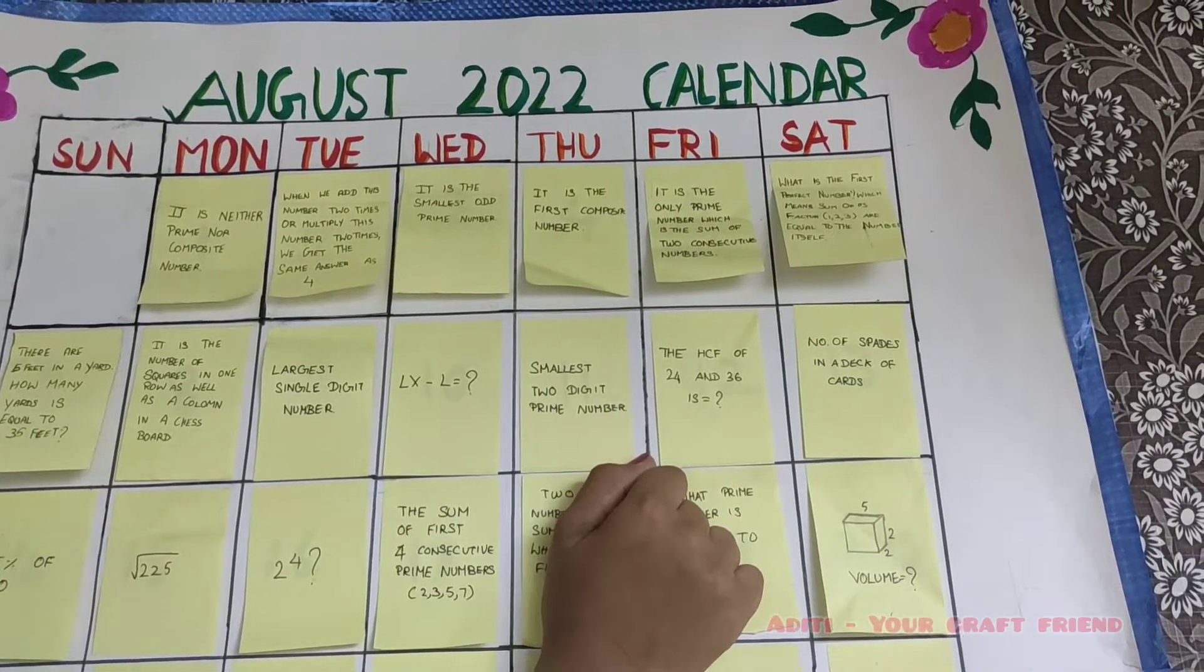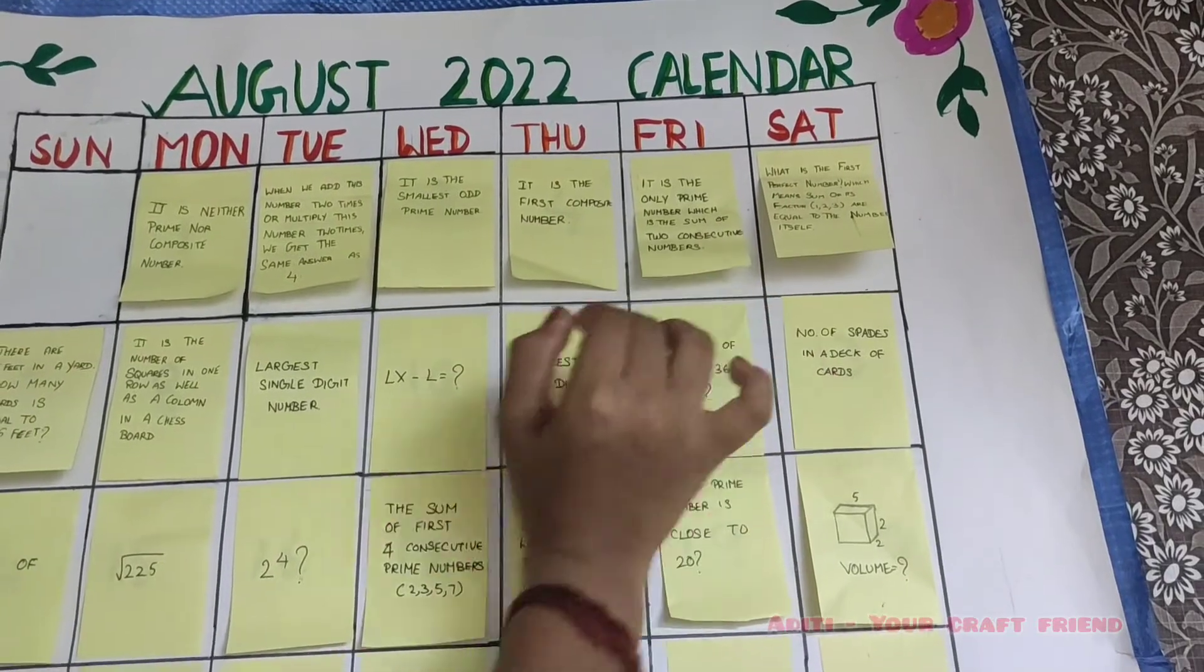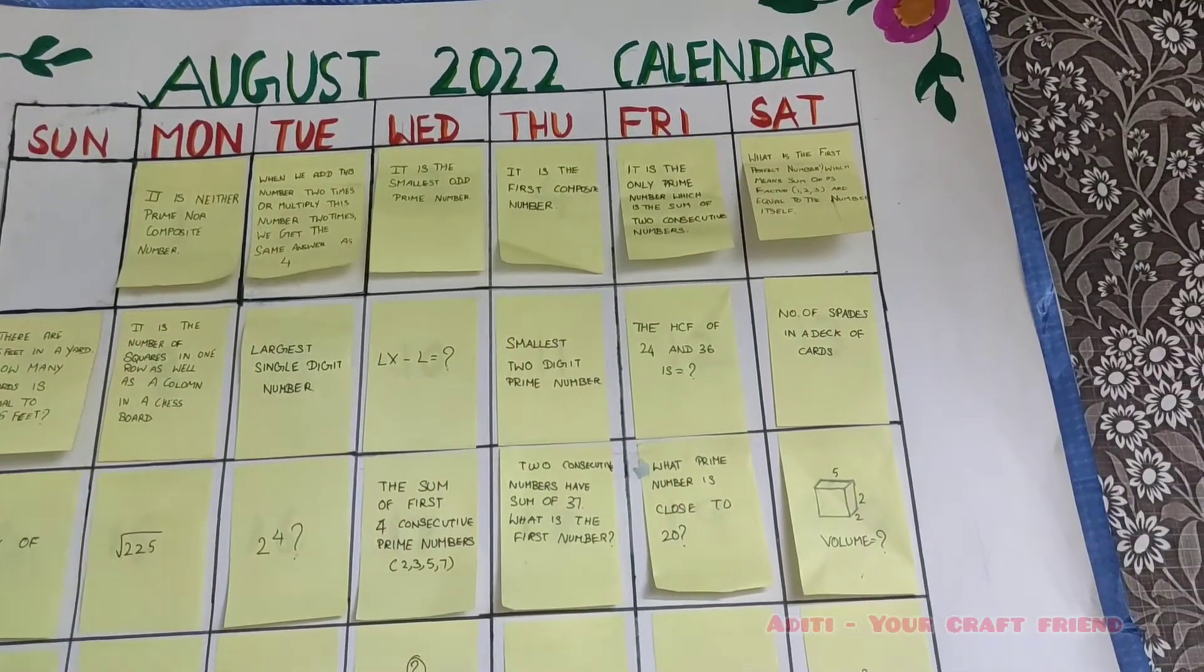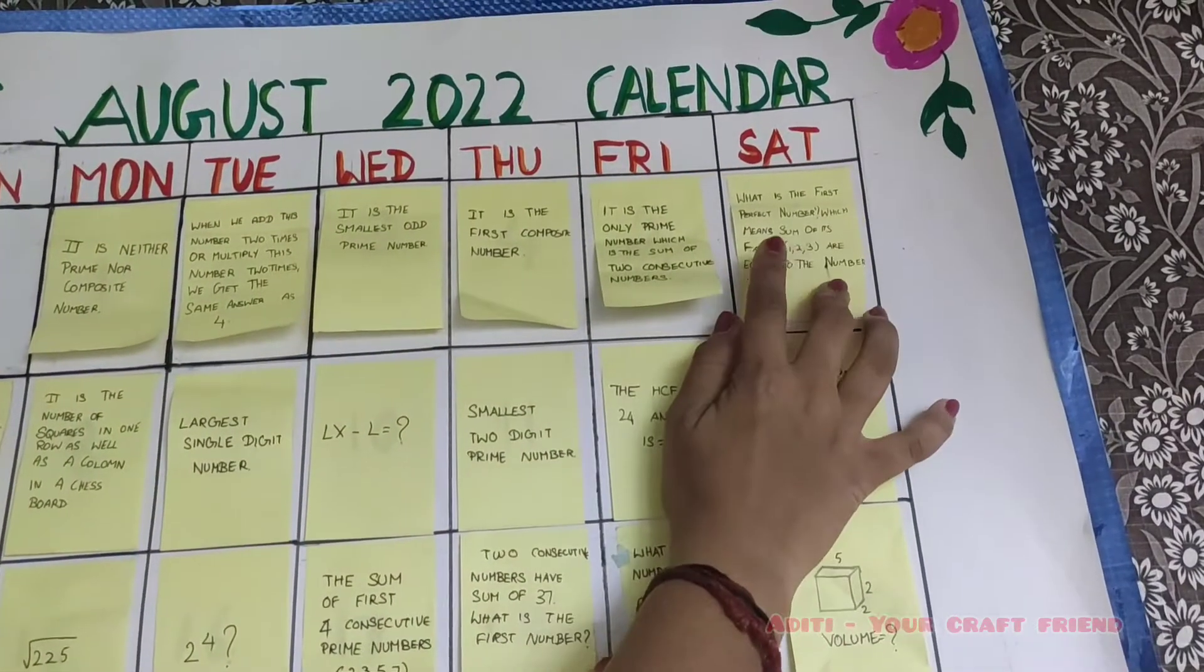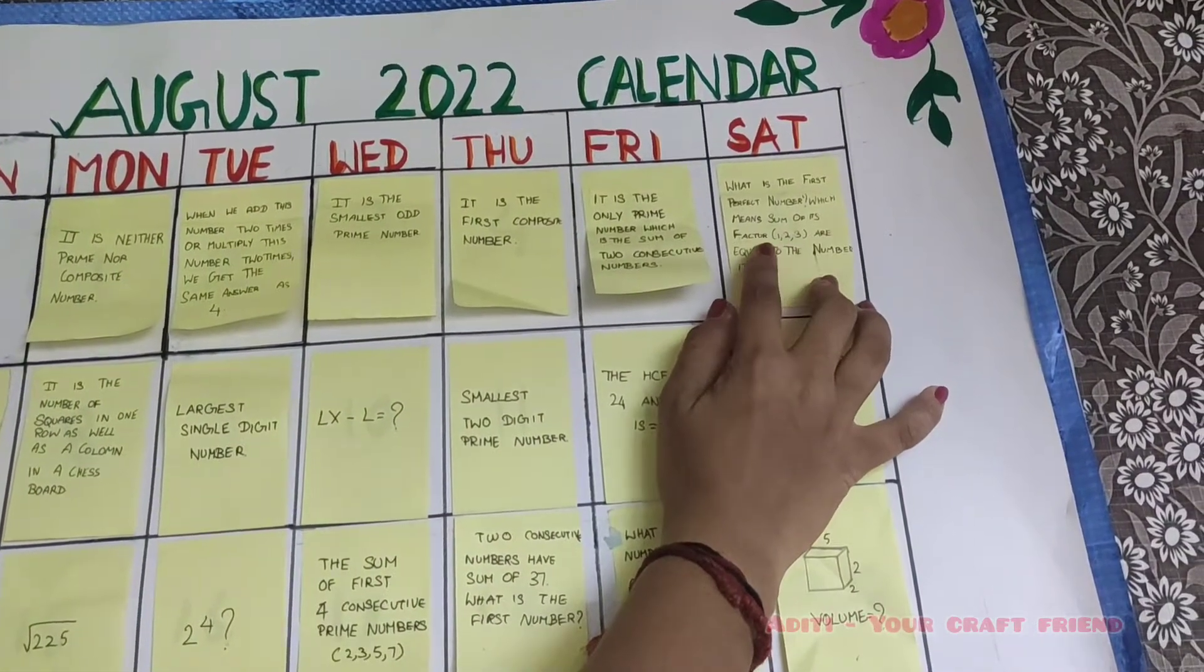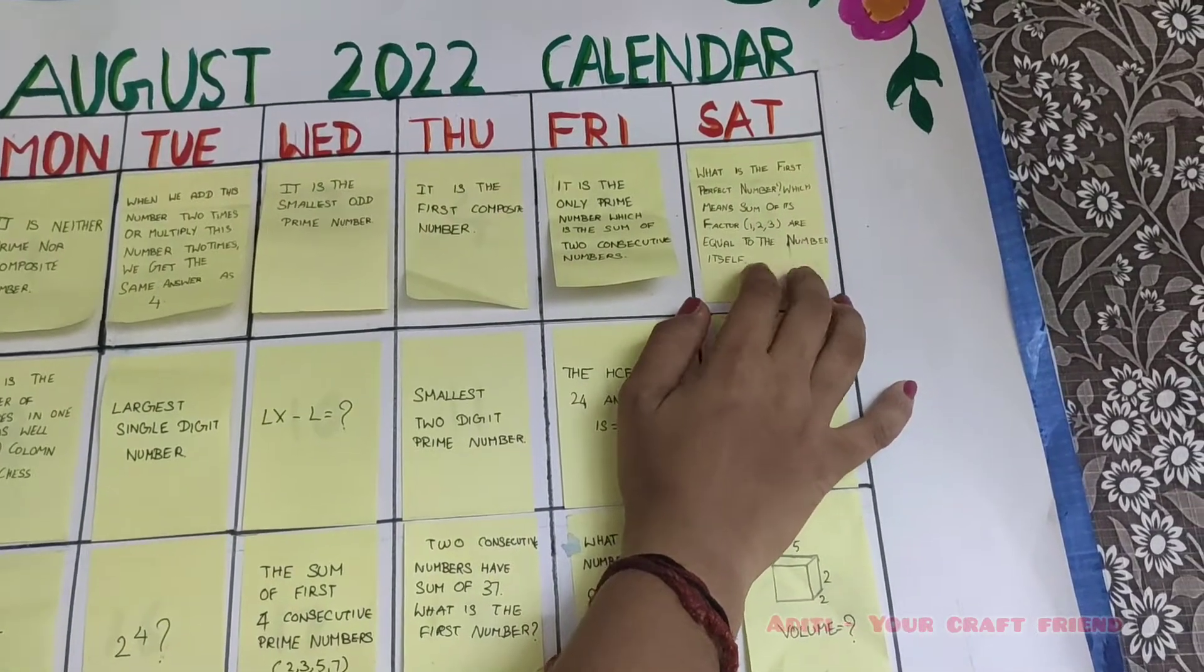It is the only prime number which is the sum of two consecutive numbers. Can you guess the answer? Yes, it is 5. What is the first perfect number, which means sum of its factors 1, 2, 3 are equal to the number itself? The answer is 6.